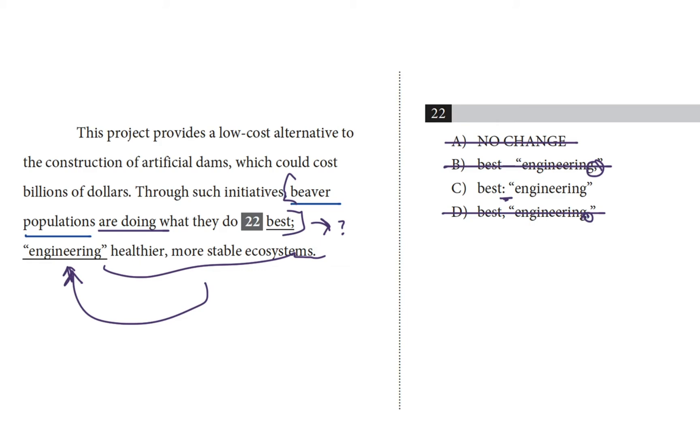It uses a colon to introduce an example, which is one of the colon's many functions. And we know it's appropriately used because it comes after an independent clause.